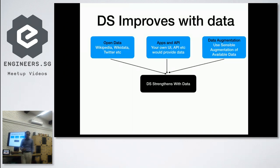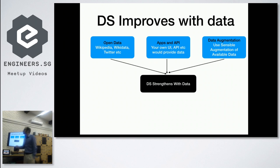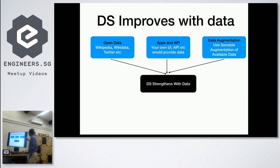Data science improves with data, and there are various avenues for data. If you're not using open data — Wikidata, Wikipedia, Twitter — you're missing out on a lot. Are you using your own UI, API, and other parts of your product chain as data for your data science? If you're not, you're losing big time. Data science learns from example data; sometimes you don't have enough training data, so there are techniques to augment what you have.